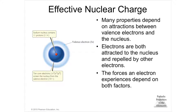Section 7.2: Effective Nuclear Charge. If you have a positive and a negative, they're attracted together, and their attraction is stronger when closer and weaker when farther away.